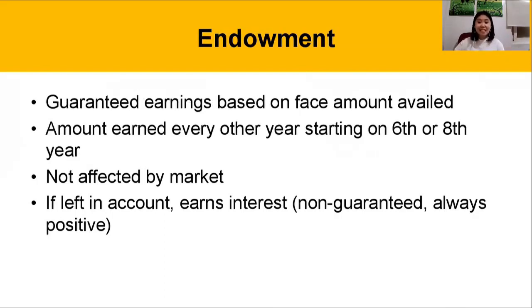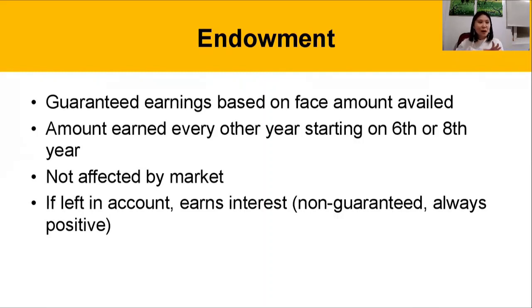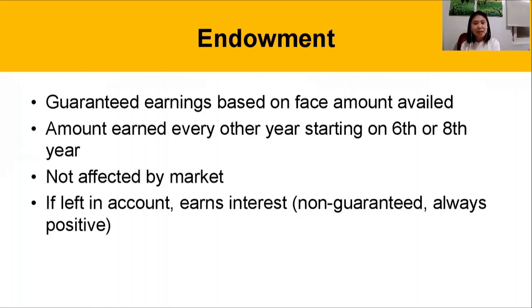The endowment is the guaranteed earnings we were talking about earlier. On top of the dividends, you get this additional benefit as well, and it gives you guaranteed earnings based on the face amount. It doesn't matter if the market is up or down — the important thing is whatever face amount you have in the plan, the endowment is locked in based on that. As long as you finish the plan, whether it's a 10-year or 5-year plan, you will receive this continuously. Usually, this is something you earn on your 6th or 8th year.